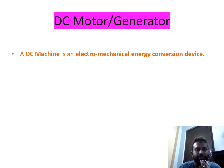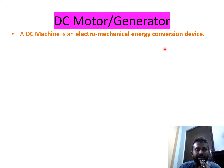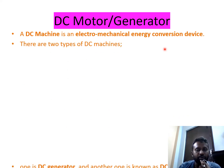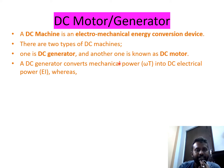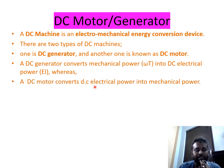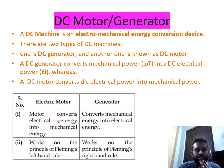A DC machine is an electromechanical energy conversion device. A DC generator converts mechanical power to electrical power — mechanical is the input, electrical is the output. A DC motor converts electrical power to mechanical power — input is electrical, output is mechanical. An electrical motor works on the principle of Fleming's left-hand rule, while a generator works on the principle of Fleming's right-hand rule.